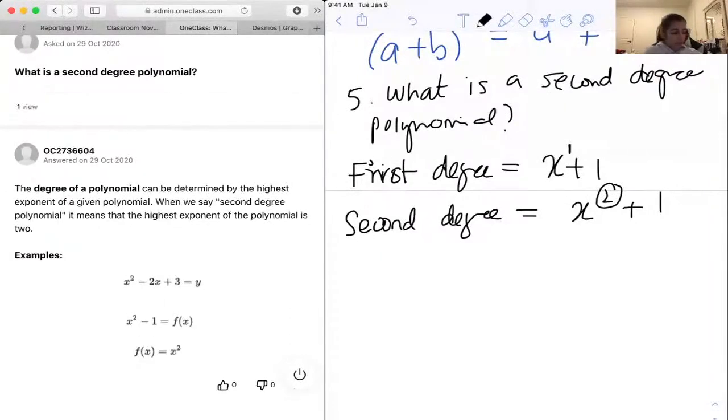An example over here that they've given us, we can do is x squared plus 2x plus 9 equals y. That is an example.